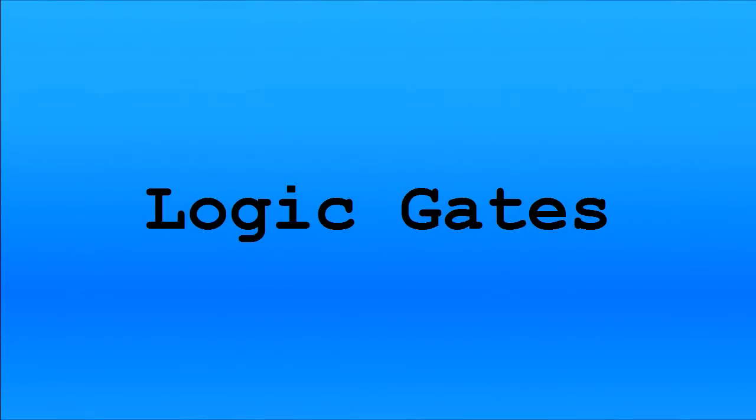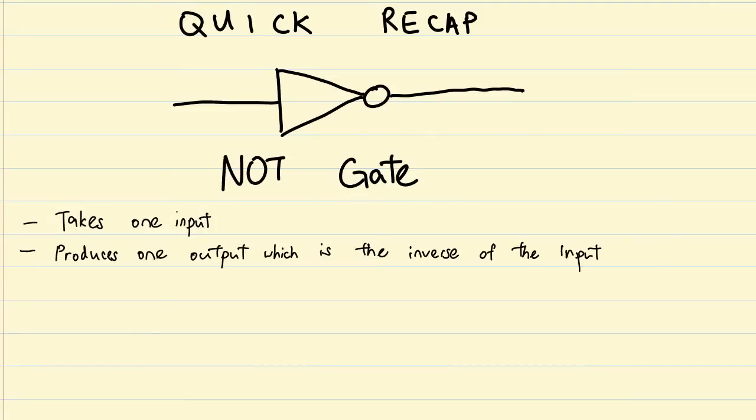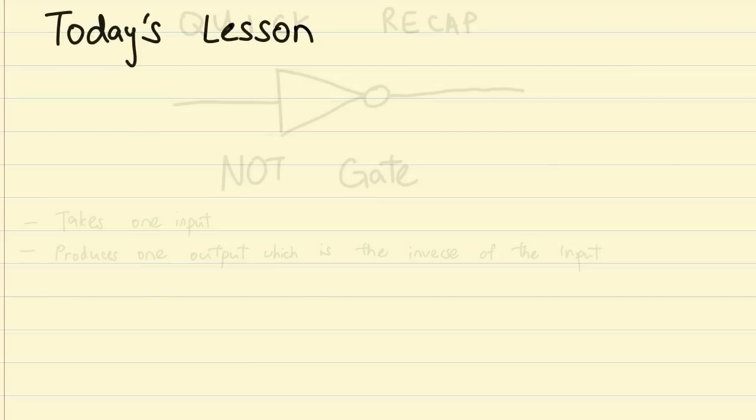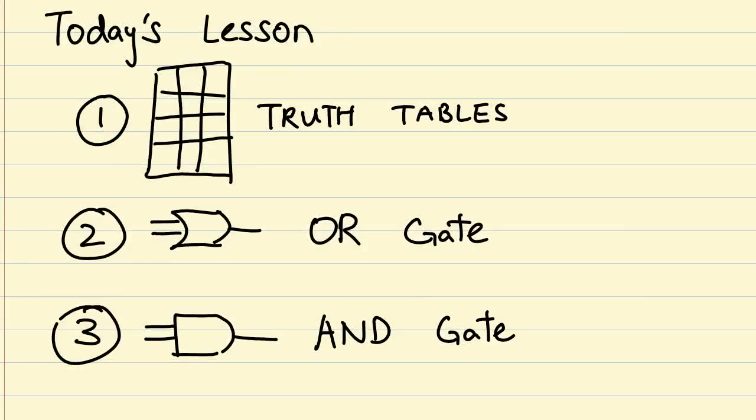Hello and welcome back to Logic Gates. In the last episode, we learned about the NOT gate, a simple logic gate that takes one input and produces one output which is the inverse of the input. Today we'll take a look at two gates that take two inputs and actually make a decision about the inputs before producing the appropriate output.